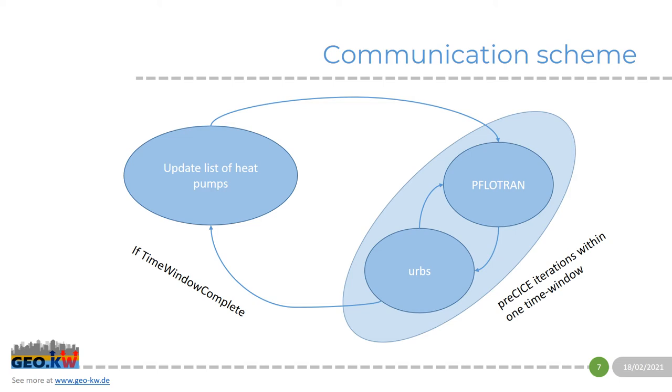Let's start with the solution for the temporal problem, the communication scheme. You can see here the rough layout of how our algorithm works. We always have to run URBS and PFLOTRAN completely and then exchange information. Normally with implicit coupling the information is exchanged multiple times within one time window, which is equal to one time step in the solver. But in our case PFLOTRAN and URBS have to run for their entire time horizon, and not just one time step.